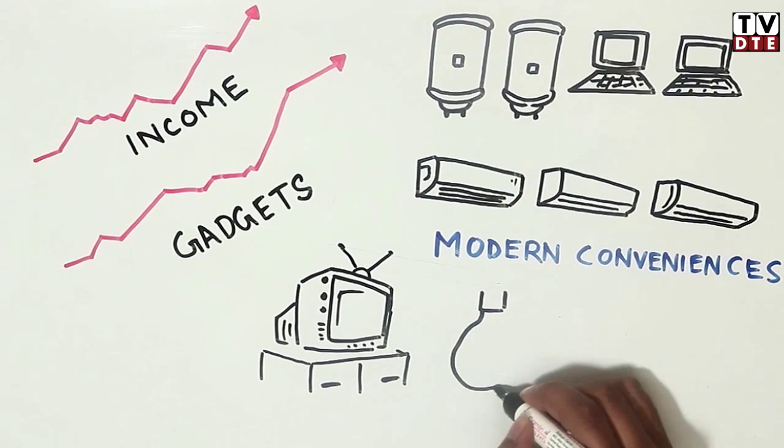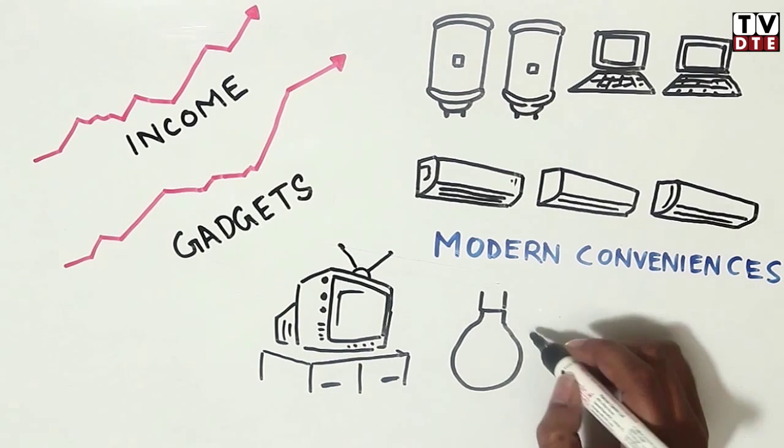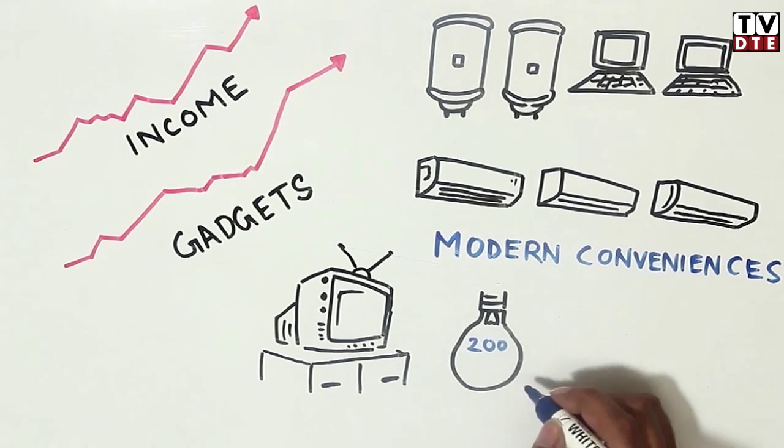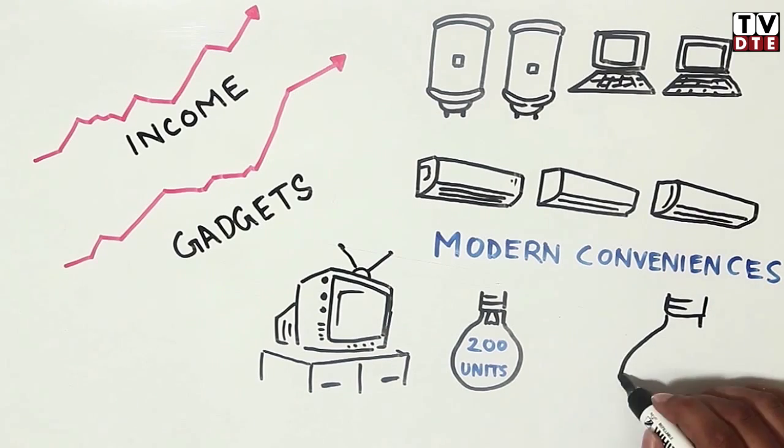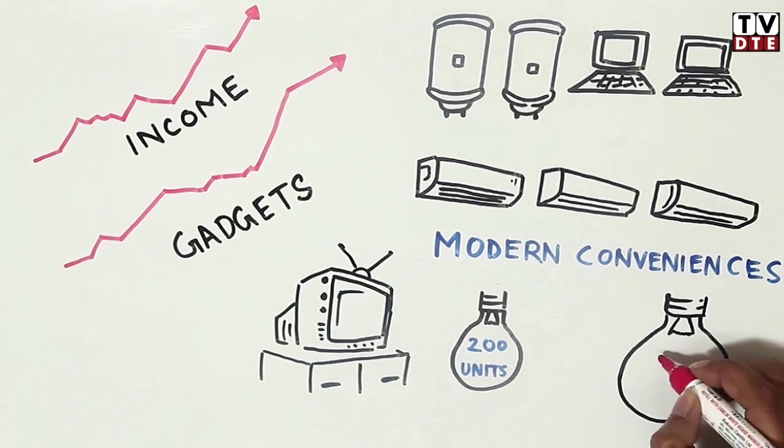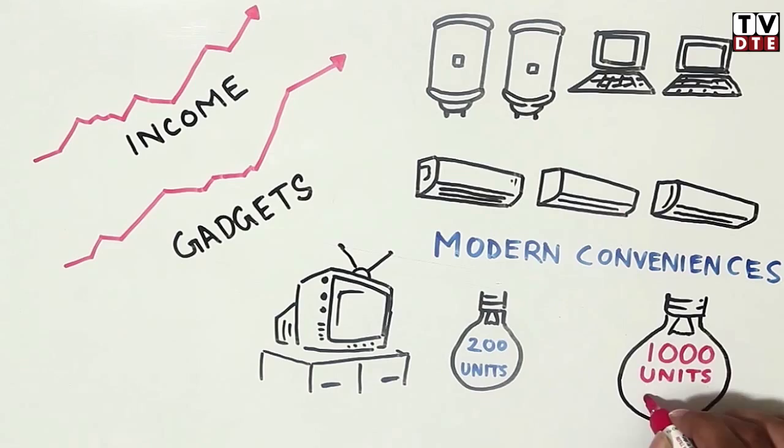Two decades ago, when Mr. Saxena moved into his new house, his electricity consumption was a modest 200 units. His household now consumes over 1,000 units every month.